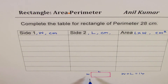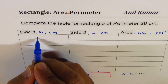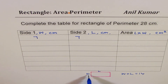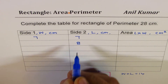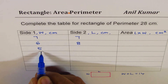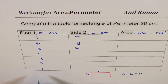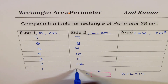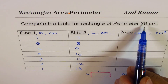I need pairs that sum to 14. Starting with 7 and 7, then 8 and 6, 5 and 9, 4 and 10, 3 and 11, 2 and 12, and 1 and 13. All these combinations give rectangles with a perimeter of 28. That's a shortcut method for you.